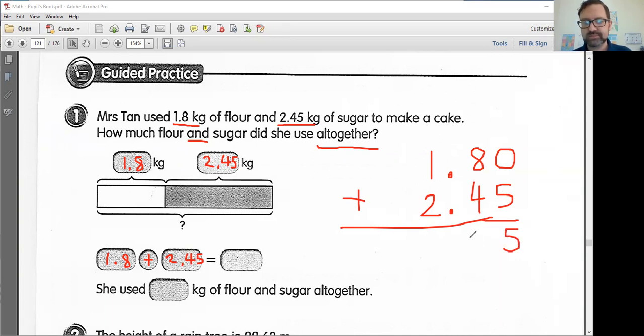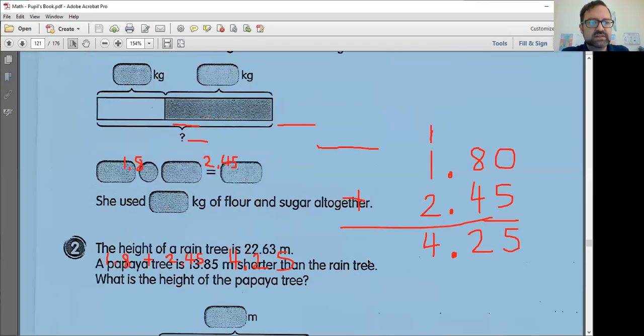Well, as I've said many times, 1.8 is the same as 1.80. So you can pretend there's a 0 there, or you can just drop the 5 down. Either way, you're going to get 5. This is just an addition problem. So it shouldn't be too difficult. 8 plus 4 is 12. Carry the 1. Please do not forget your decimal point. Bring it down right where it should go. 1 plus 1 plus 2 is 4. So we should end up with 4.25 kilograms. And we should write that here. She used 4.25 kg of flowers and sugar altogether. I'm not going to because my writing is super messy on this computer. Let's just move on to problem number two here.